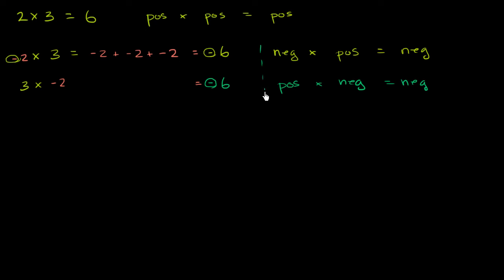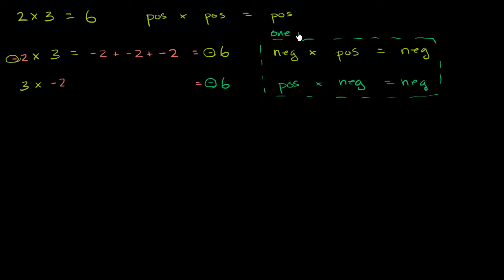Both of these are just the same thing with the order of multiplication switched around. When exactly one of the two numbers is negative and one is positive, then you will get a negative product.